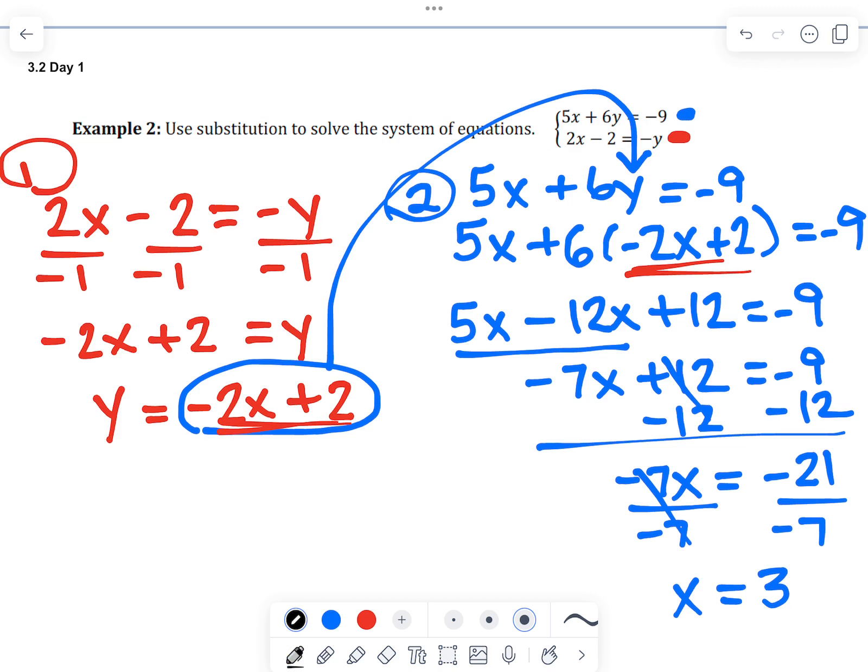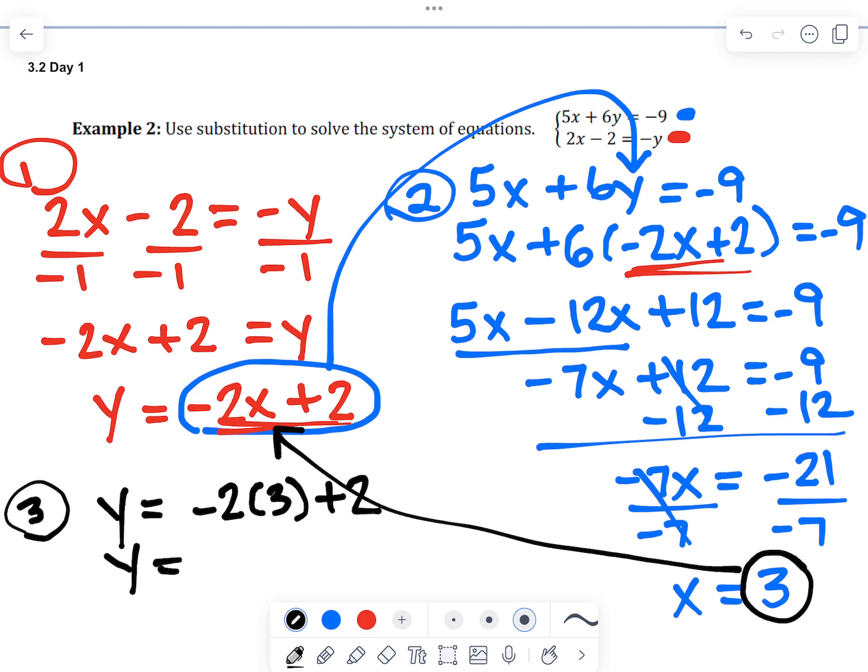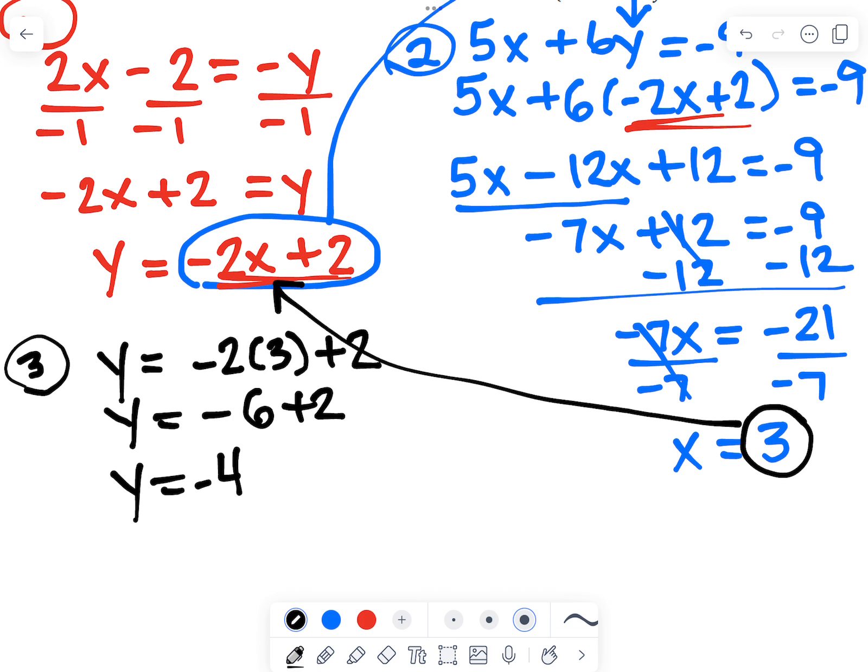Step 3 is now to take that 3 and substitute it back into that equation in the red. And then simplify for y. And our y value is negative 4. So the solution is 3 comma negative 4. If we were to graph these two lines, this is where they would intersect.